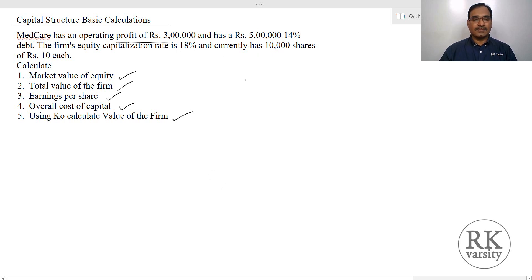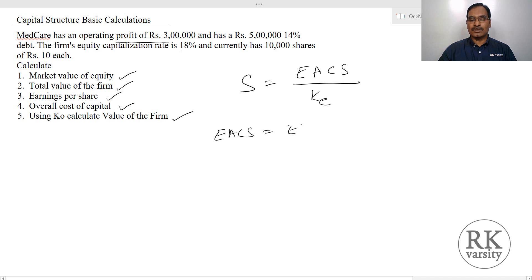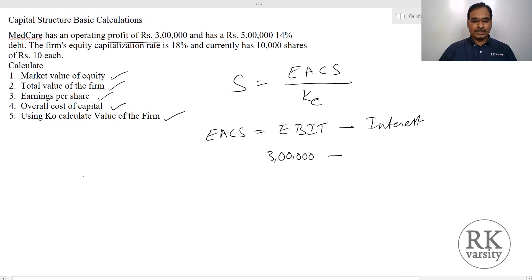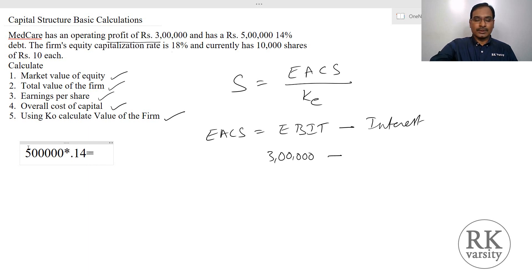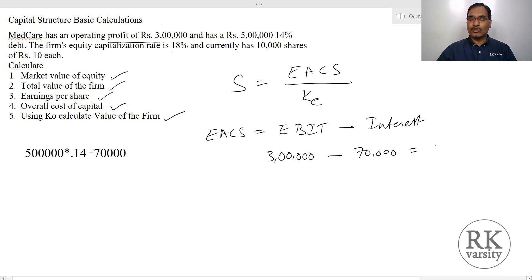First, calculate the market value of equity, denoted as S. This equals earnings available to common shareholders divided by the cost of equity or equity capitalization rate. Earnings available to common shareholders (ESCS) equals EBIT or operating profit minus interest. Here our operating income is 3 lakhs and interest is 14% of 5 lakhs debt, which is 5 lakhs times 0.14, giving an interest amount of 70,000.